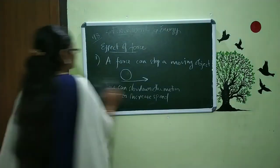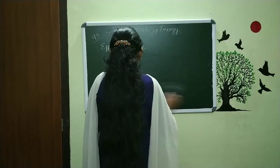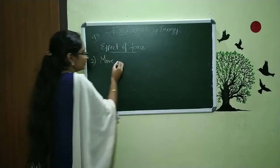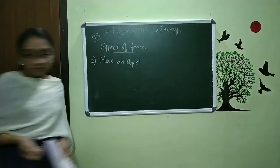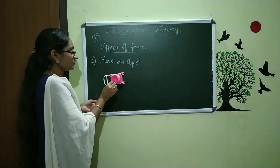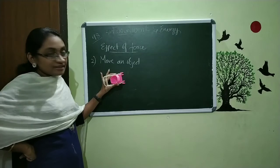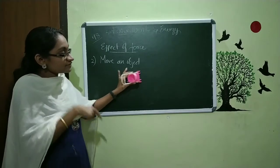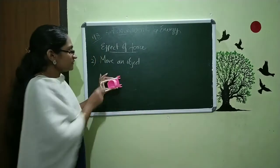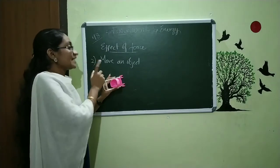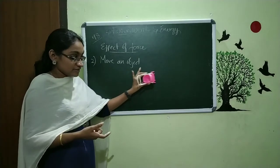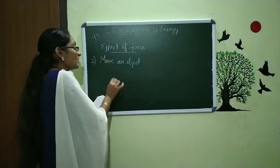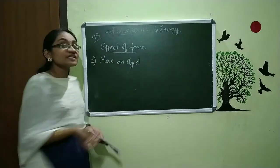Now we are going to discuss the next point about the effect of force — the second point: move an object. One vehicle is there at rest. How can I move it? I want to push it. When I give force on this, it moves from one place to another. If I am not giving any type of force, there is no motion. So to move an object, we want to apply a force — that is the second effect of force.